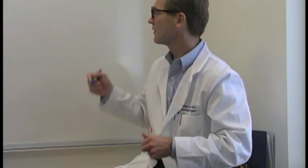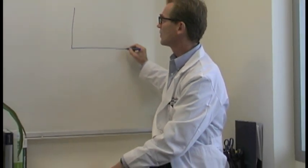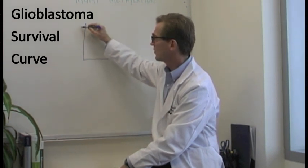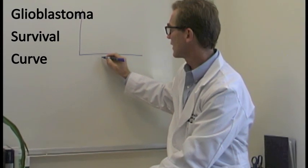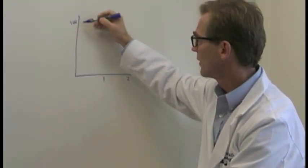So let's just look at what happens if you have a glioblastoma and you plot out survival on a Kaplan-Meier survival curve. This is 100% of patients alive at the time of diagnosis, and this is survival in one year, two years, three years.